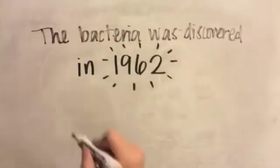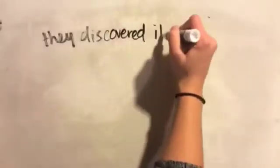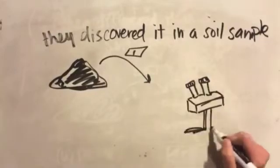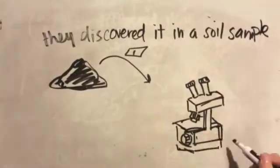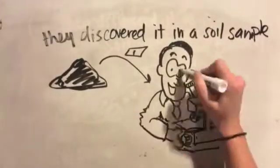The bacteria was discovered in 1962 by Stolp and Starr. They discovered it in a soil sample upon a quest to isolate bacteriophage from soil samples. Instead, they recognized small, motile, Vibrio-shaped cells.